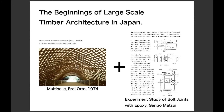Inspired by Frei Otto's projects in Germany, Yo realized the potential of combining small pieces of wood to create a large space. But the problem was the joinery — how to join the small pieces. Yo found a solution: Professor Matsui Gengo at Waseda University proposed using a ball-joint system with epoxy resin. Thanks to this solution, Yo became confident in designing large-span timber architecture.